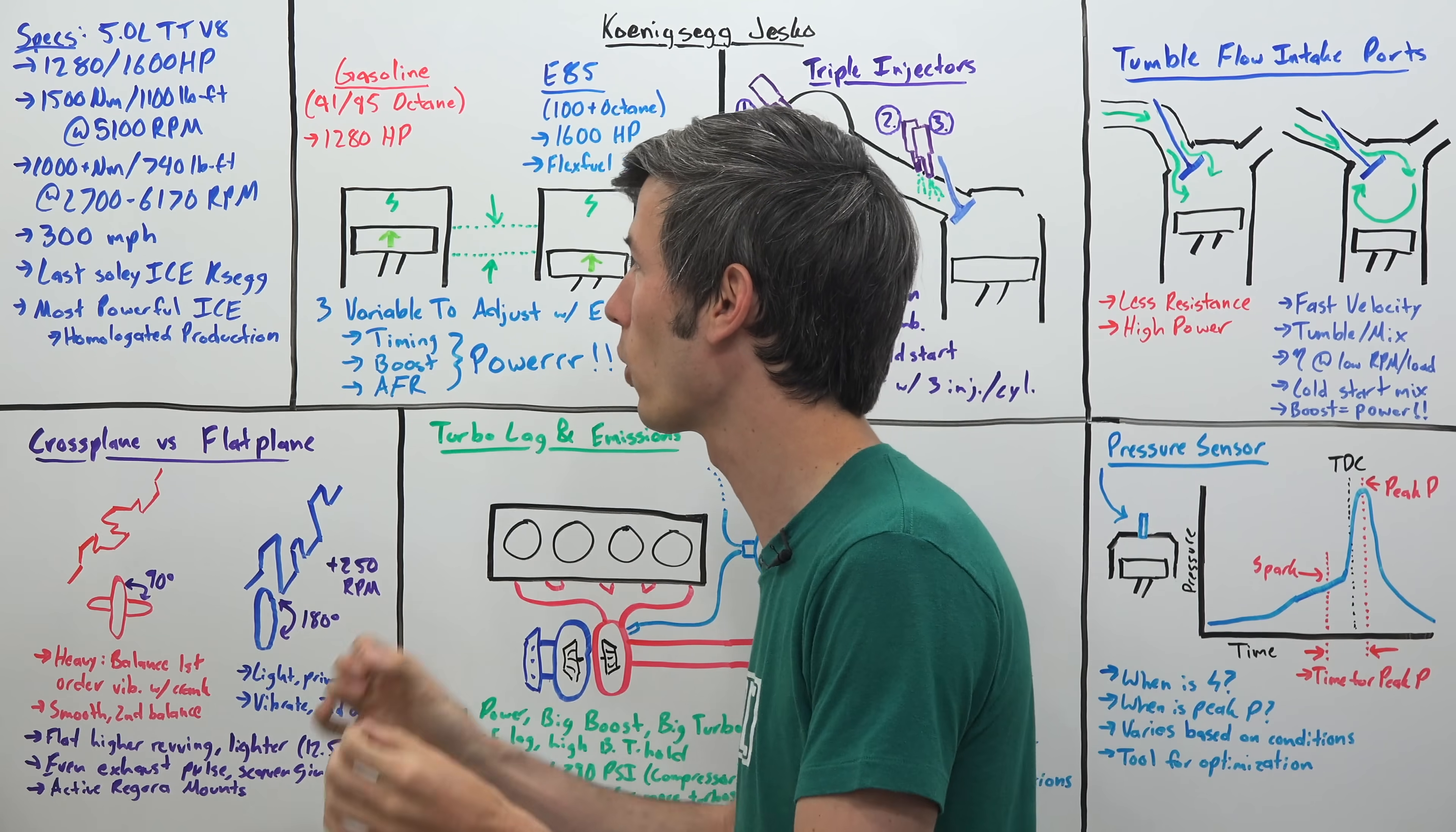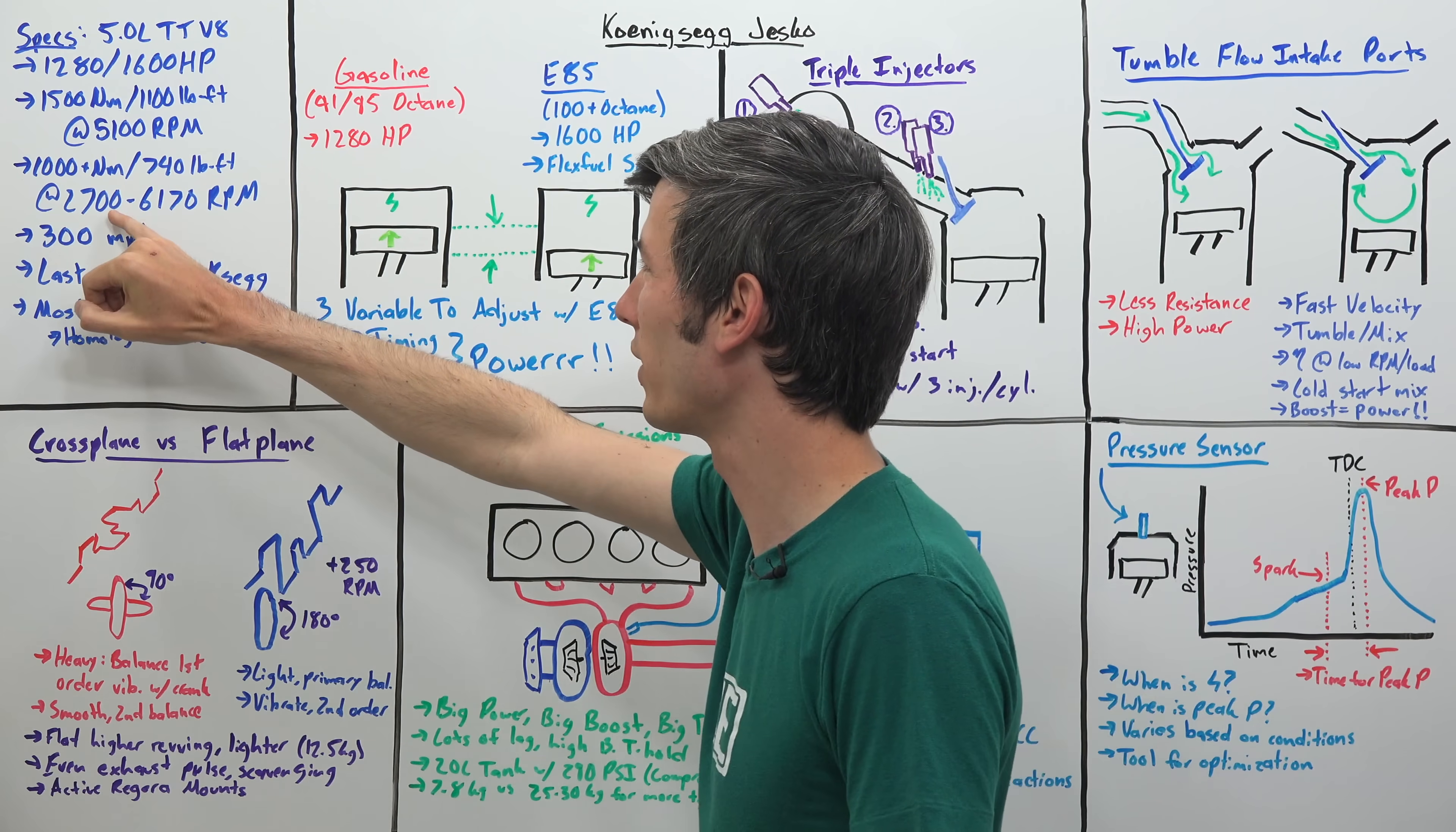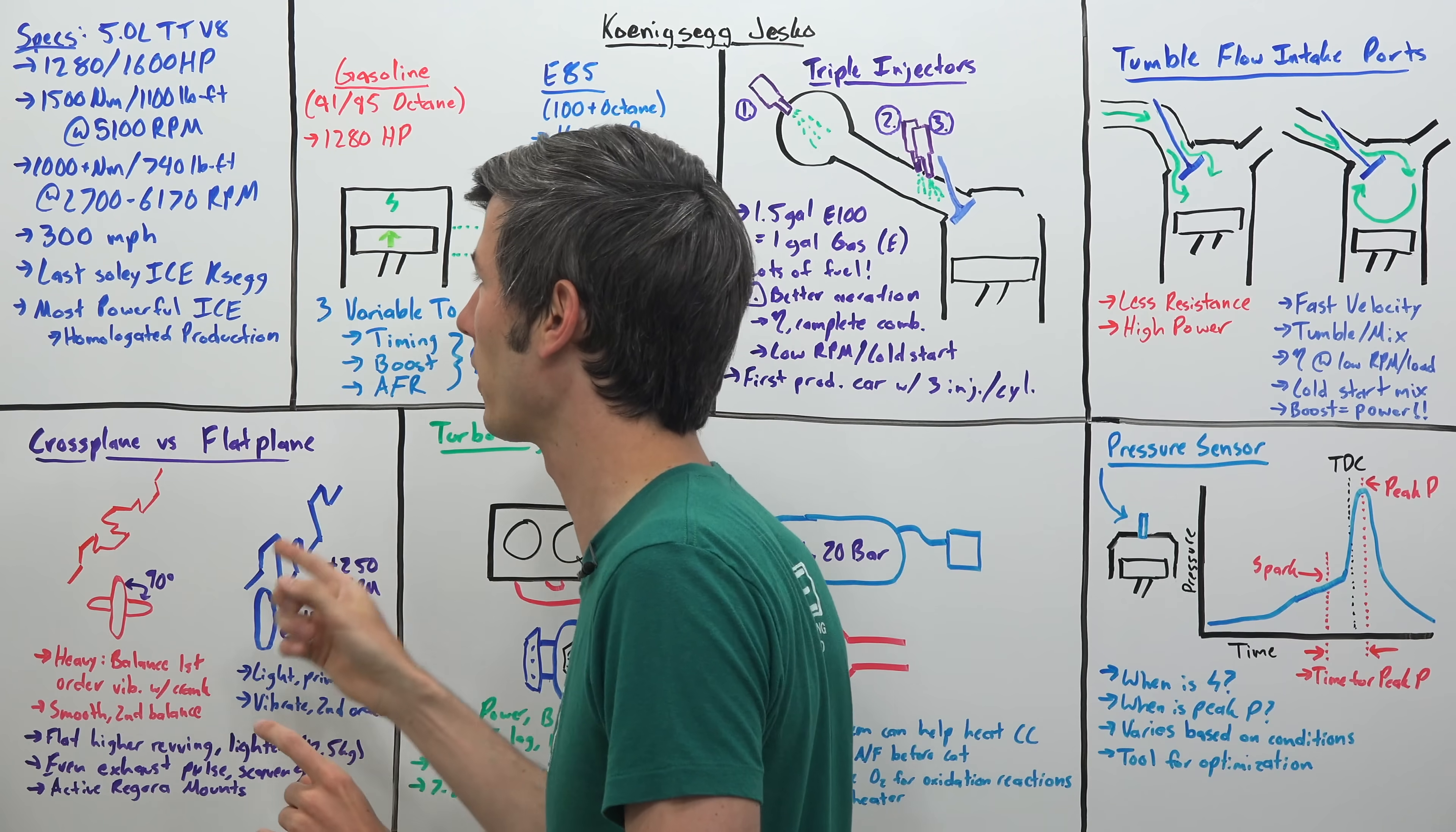1600 horsepower, a thousand newton meters of torque from just 2700 rpm with that peak torque coming on at 5100 rpm. That range of a thousand newton meter plus of torque from 2700 to 6170 rpm, and then revving all the way to 8500 rpm thanks to a flat plane crankshaft which we will get into later.